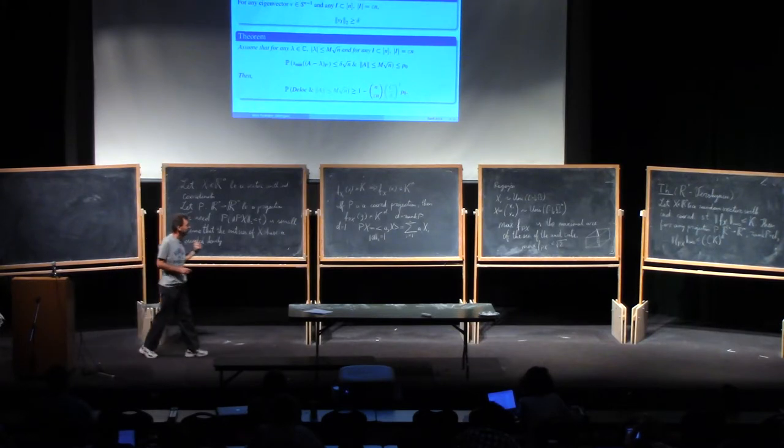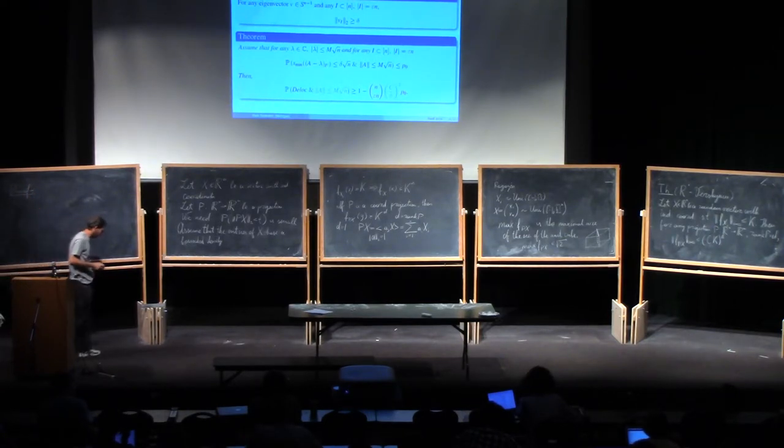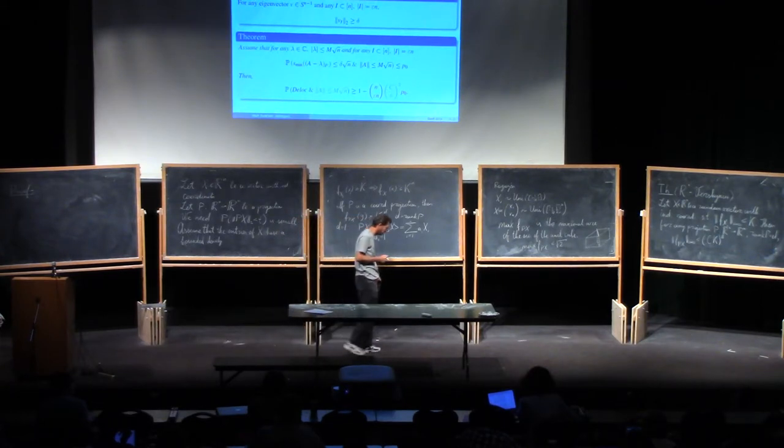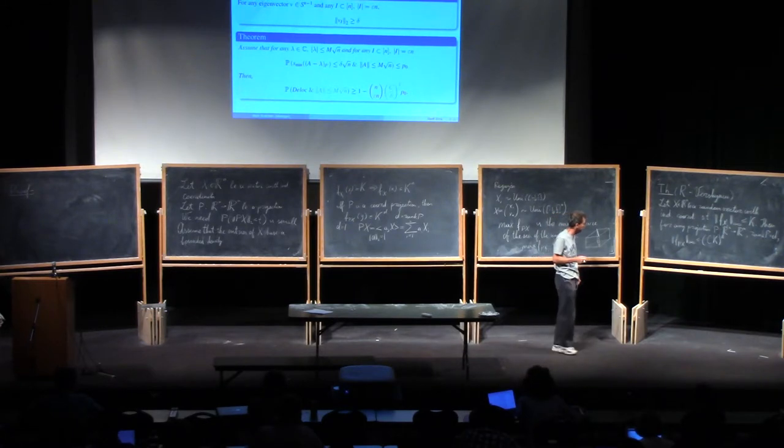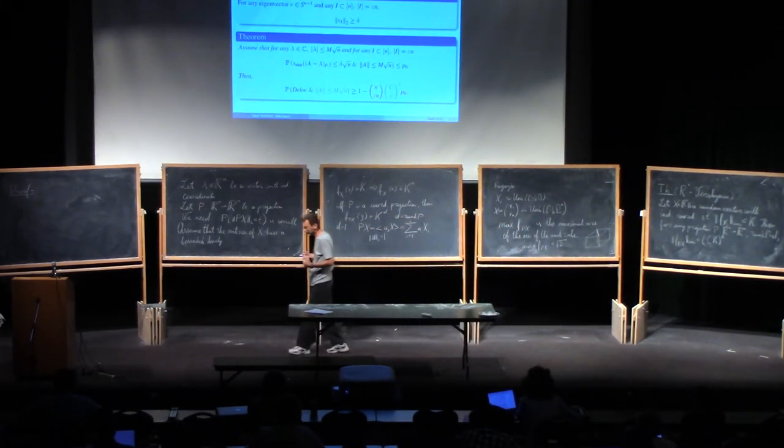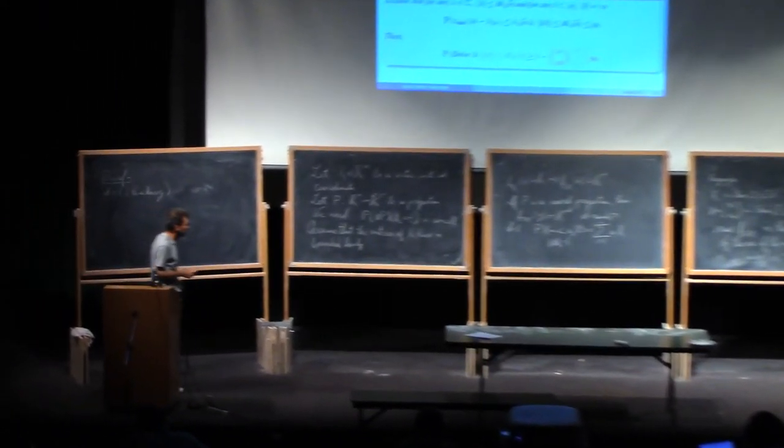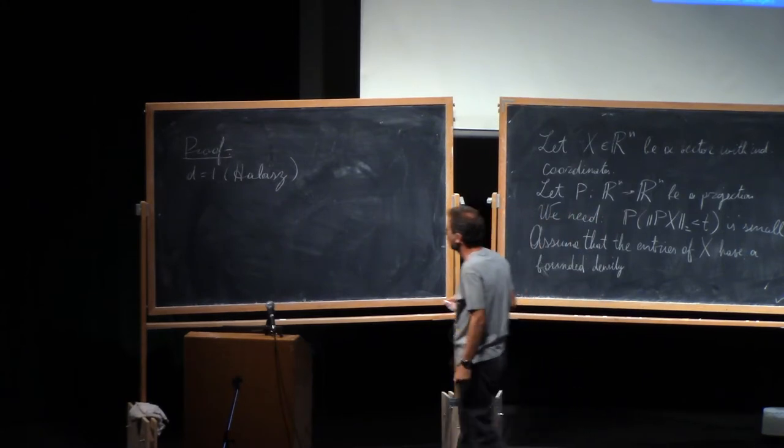Before we prove this theorem in full generality, let's consider a one-dimensional case. This is the simplest possible one, and here the method of proof was proposed by Nazarov and Ball, who used Fourier transform, but their paper was never published because they discovered that this method appeared before in the works of Hollis. If you read the argument of Hollis, it's precisely this: d equals one. Only Hollis considered discrete random variables, but if you adopt this method for continuous random variables, you will get a proof.